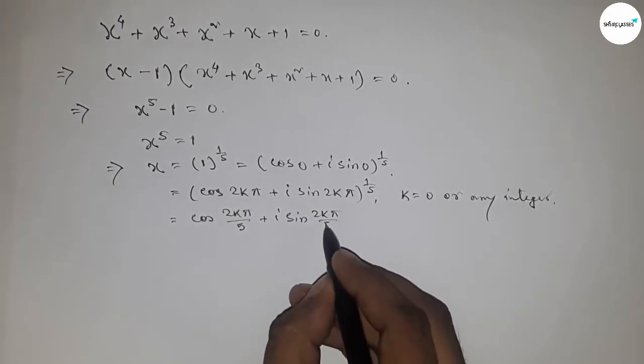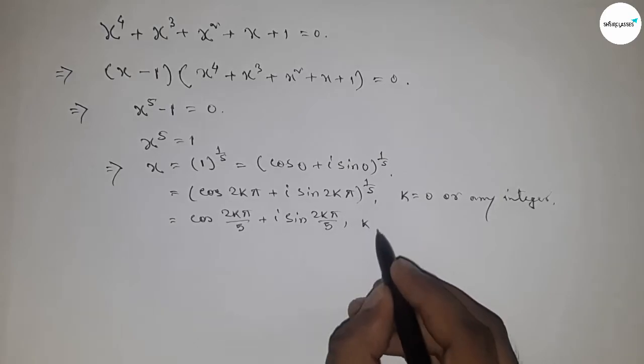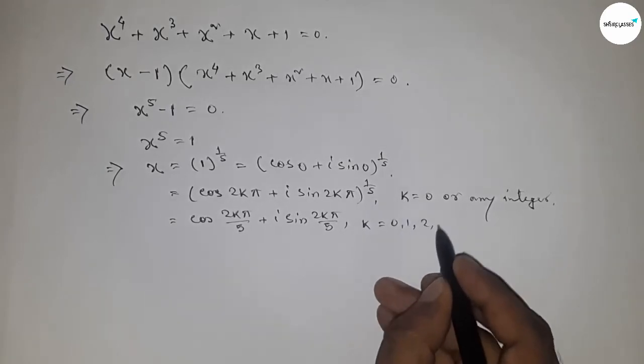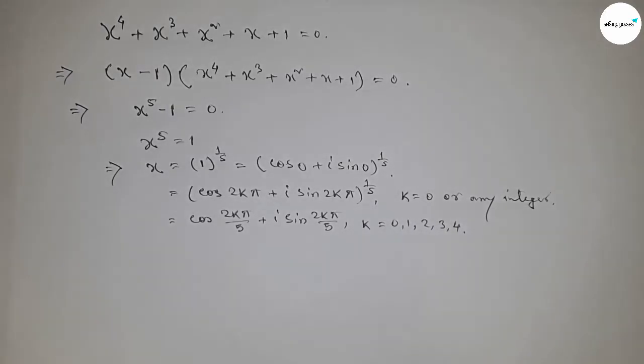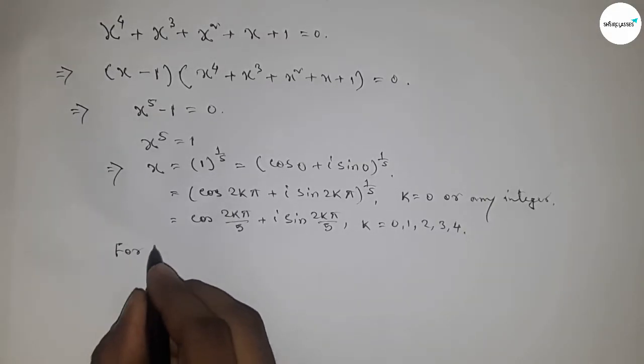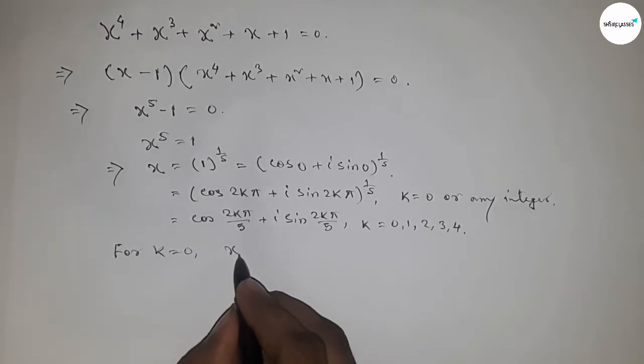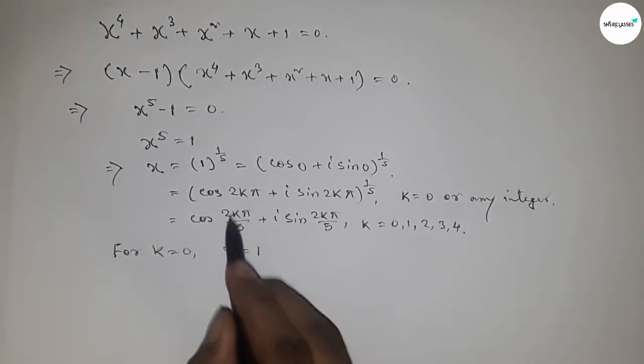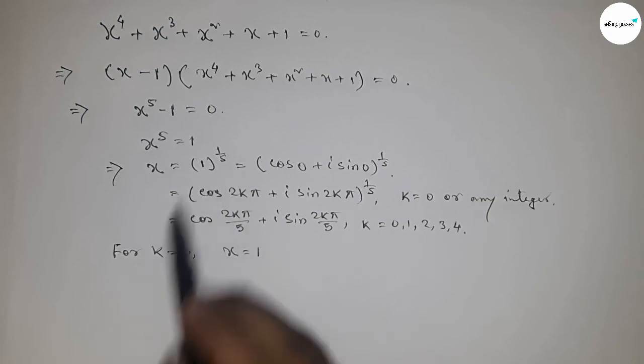So now for k = 0, we can write x = 1. If putting k = 0 here, then this is 1. For k = 1, if you put k = 1